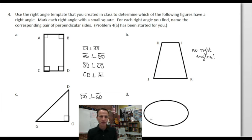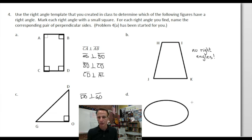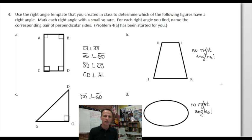Now here, what do we have? We have an oval. Any right angles? No. So — no right angles.